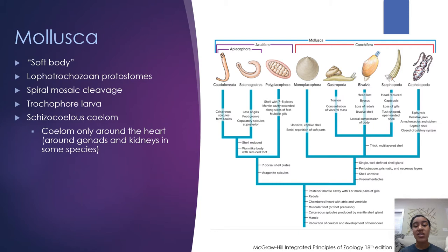Their coelom develops via the schizocoelous method. The interesting thing about their coelom is it's heavily restricted to around the heart. In some species, they also have a coelom that encompasses their gonads or their kidneys, but for the most part the coelom is really only restricted to around the heart.